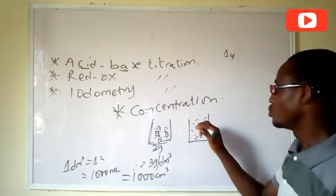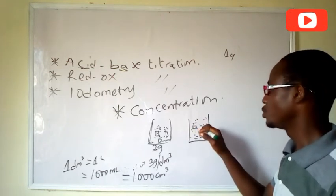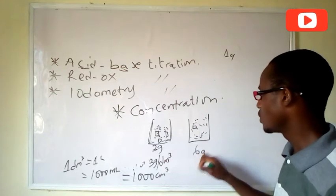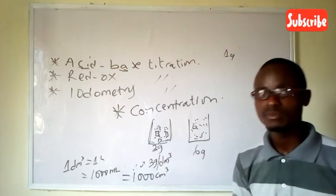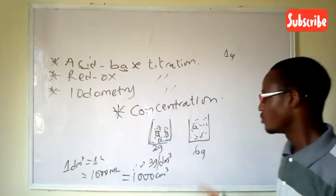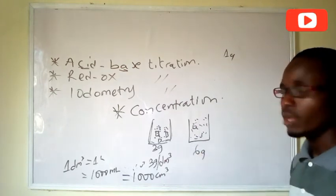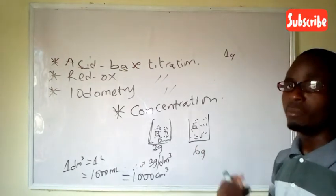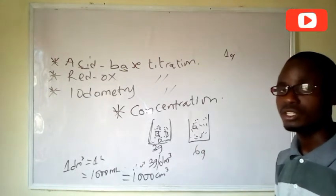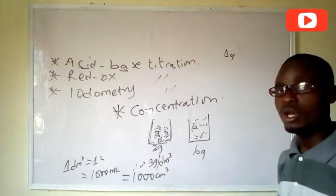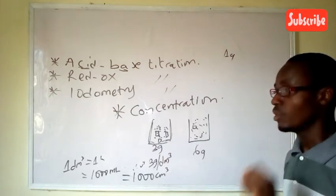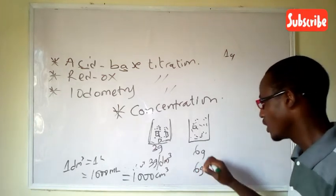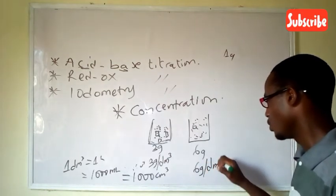If I decided to put six cubes of sugar here, that implies this contains six grams. From there we can see that the mass concentration — the mass of the solute present in one liter of the solution — is six grams per dm³.